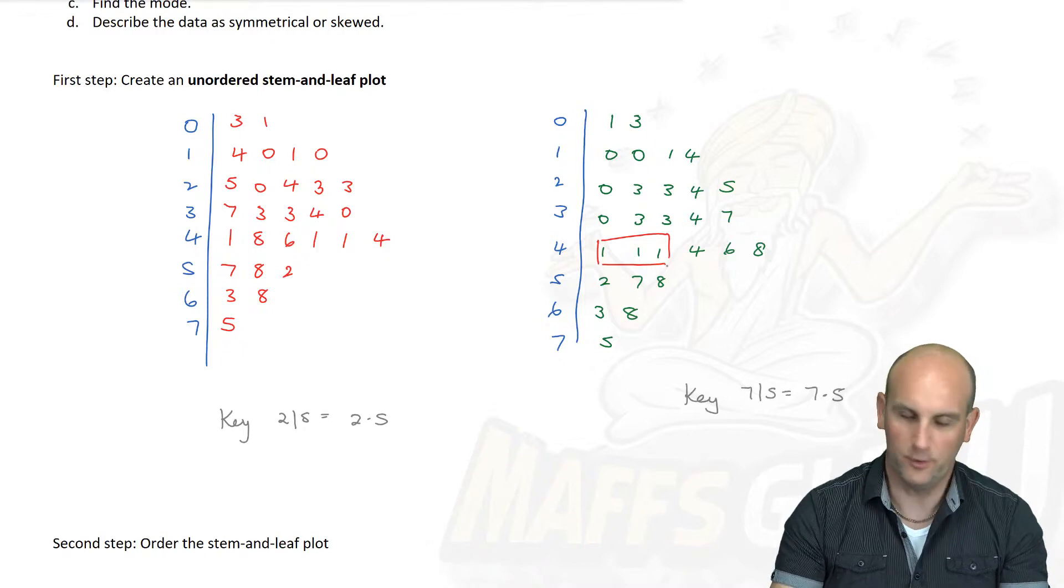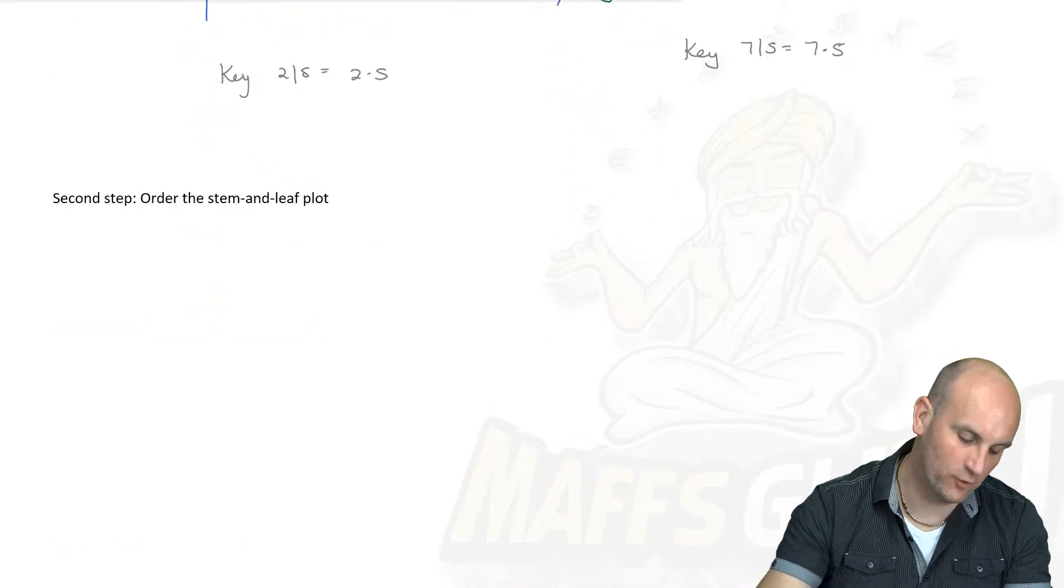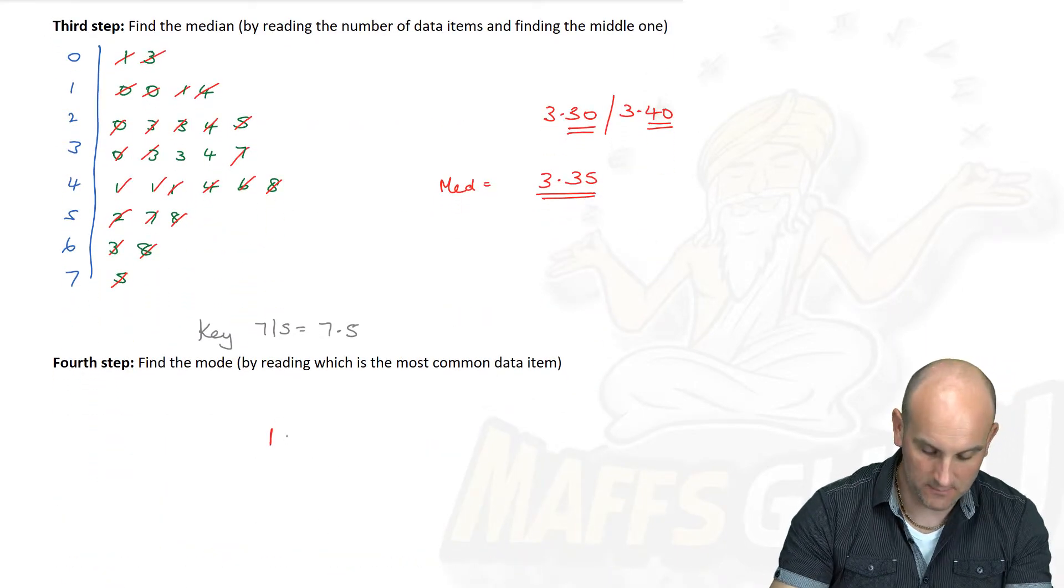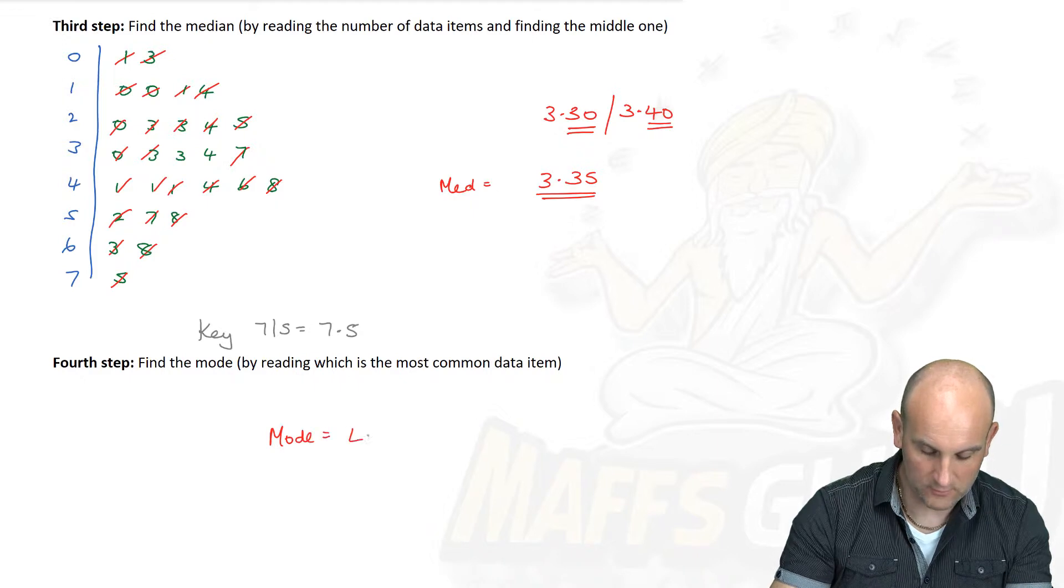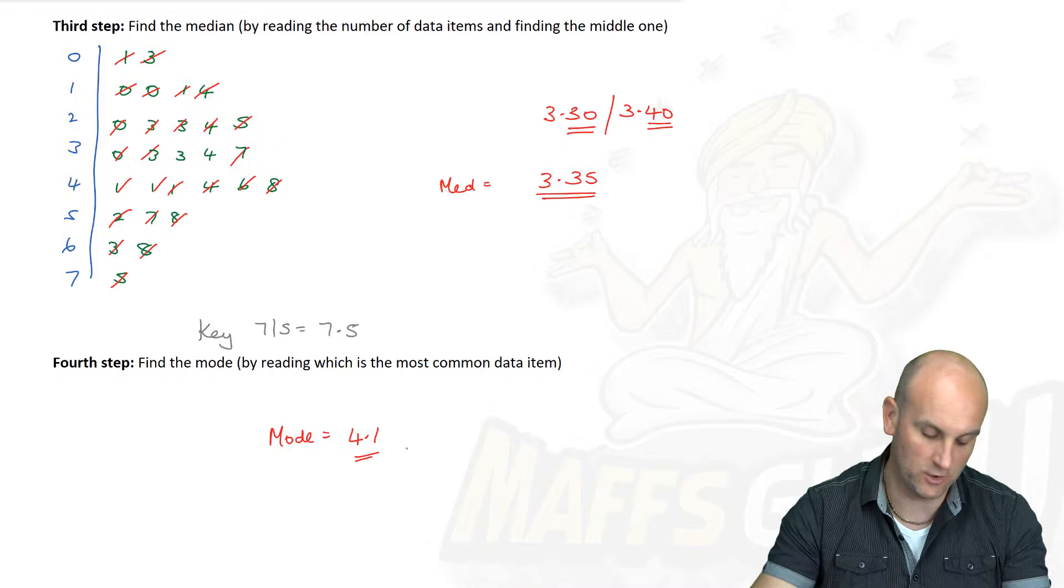No. Again, read the data properly because it's actually 4.1. And ladies and gentlemen, just by reading off that graph, I can now say that my mode would be equal to 4.1 because it's the most common value, the one that there's most of.